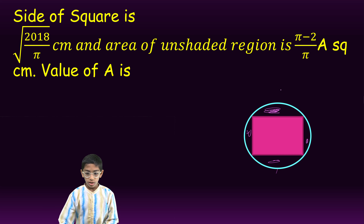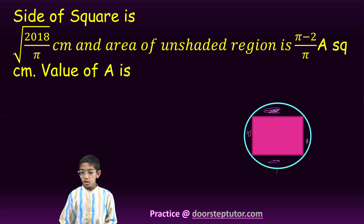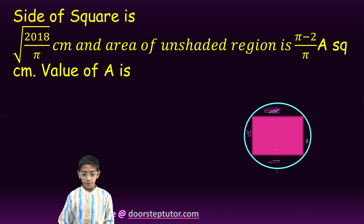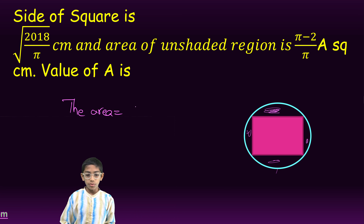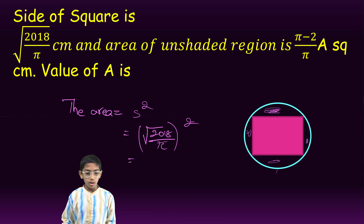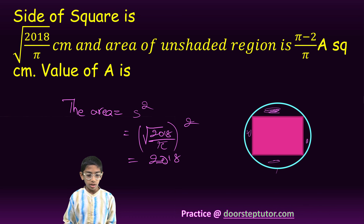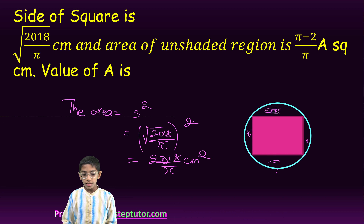So first we will find the area of the unshaded region. To do that we will first find the area of the square. The area of the square is equal to side squared, so under root of 2018 upon pi, the whole square, which is equal to 2018 upon pi. So this is the area of the square.